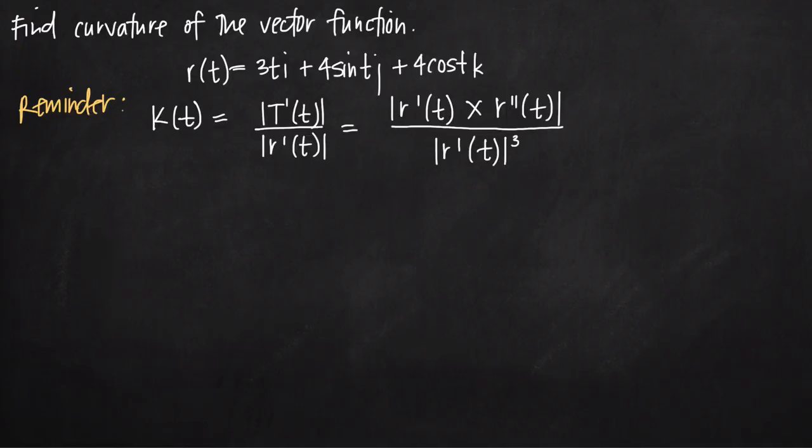Today we're going to be talking about how to find curvature of a vector function. In this particular problem, we've been given the vector function r(t) equal to 3t times i, plus 4 sine t times j, plus 4 cosine of t times k. That's our vector function, and we need to find curvature.